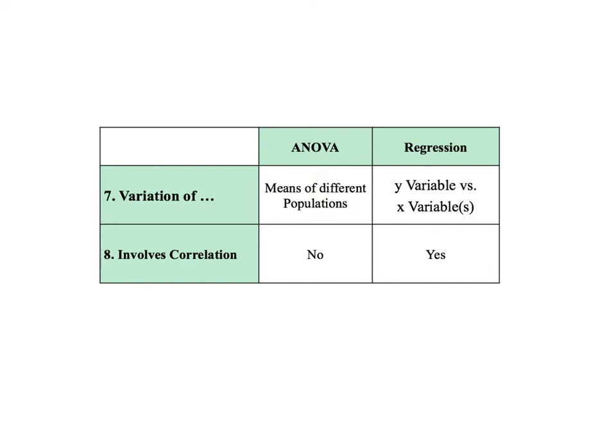For example, we know that variables X and Y can vary — that is, all their values in a sample will not be identical. The first question for regression is: do X and Y vary together, either increasing together or moving in opposite directions? That is, is there a correlation between the X and Y variables? If there is not a correlation, as demonstrated by a scatter plot and the correlation coefficient R, then we will not even consider doing a regression analysis.